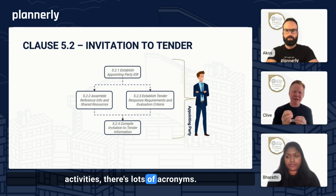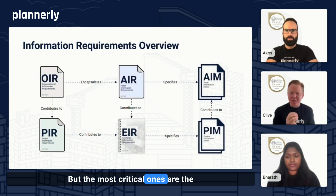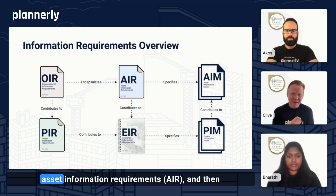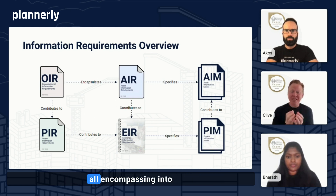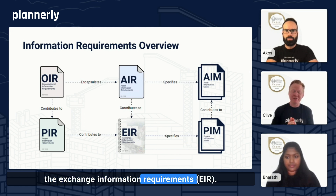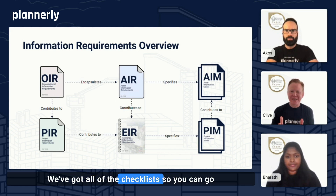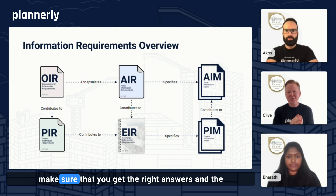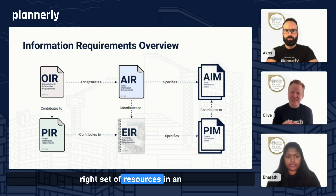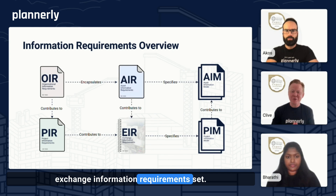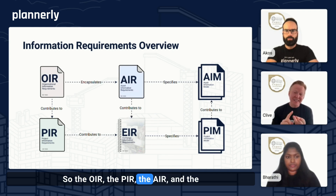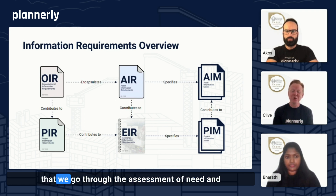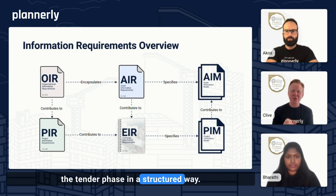Out of all of these activities, there are lots of acronyms, but the most critical ones are the organizational information requirements, the project requirements, the asset requirements, and then all encompassing into the exchange information requirements. It's a structured process. We've got all of the checklists so you can go through them and understand the right questions to ask to get the right answers and the right set of resources in an exchange information requirement set. So the OIR, PIR, AIR, and EIR form that set of documents that make sure we can go through the assessment of need and the tender phase in a structured way.